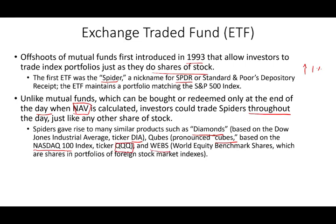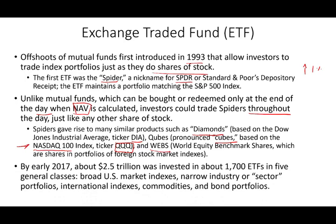We also have the WEBs — the World Equity Benchmark Shares. You can buy an ETF that tracks exactly what's going on in the NASDAQ 100 top 100 stocks. These ETFs are very popular these days. By 2017, there were about 2.5 trillion dollars invested in those ETFs across 1,500 ETFs and five general broad classes, like the US market index, industry or sector ETFs, international indexes, commodities, and bonds.